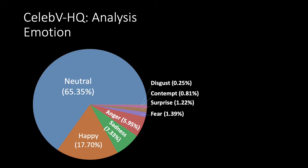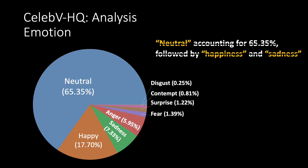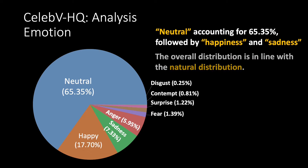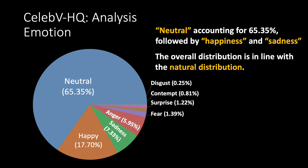The proportion of emotion attributes also varies, with neutral accounting for the largest proportion, followed by happiness and sadness. Unlike data collected in the laboratory, we do not strictly control the proportion of each attribute, so the overall distribution is more in line with the natural distribution.